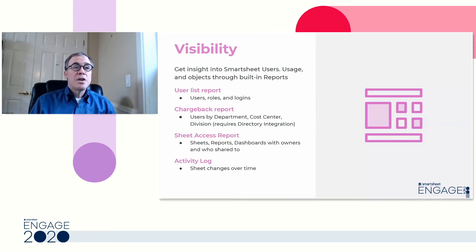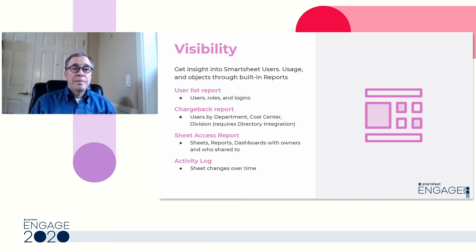First, visibility. Smartsheet has a lot of built-in reports you can use for visibility. The first is the user list report — a list of users, both licensed and non-licensed, their roles (for example, system administrator or group administrator), when they last logged in, and when their account was created. The second is the chargeback report, which adds three fields to the user list report: specifically department, cost center, and division. So if you're looking to do reporting by department or see usage within a particular division, you can do that using this report.